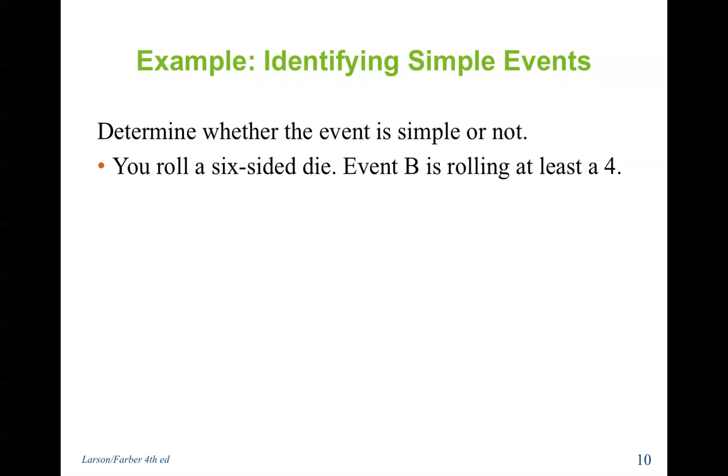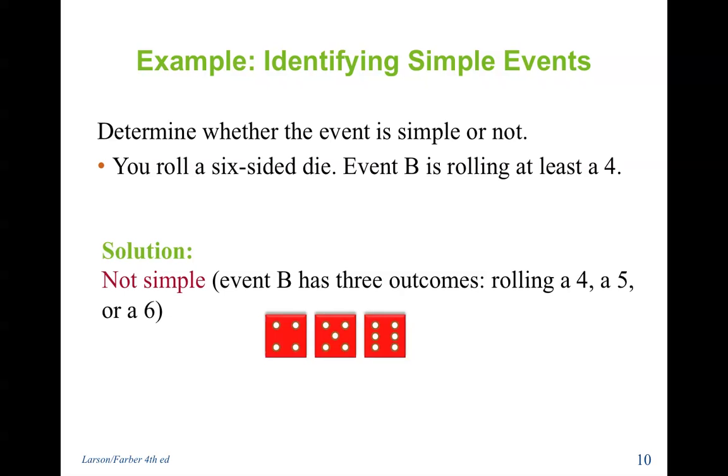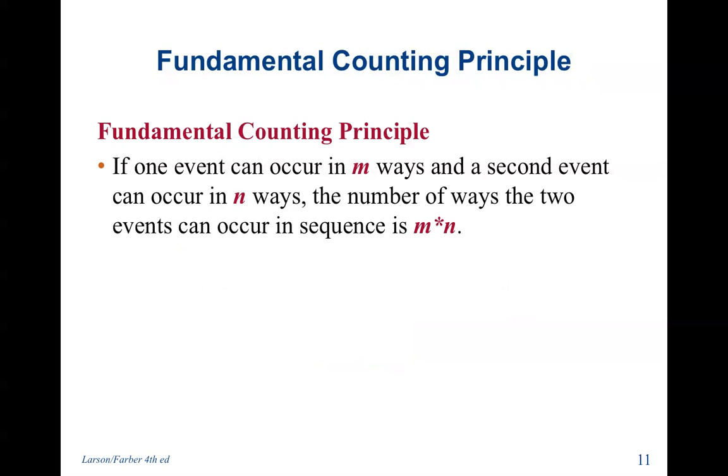Determine whether the event is simple or not. You roll a six-sided die, event B is rolling at least a four. Is there more than one possible choice with this? This one's not simple because there's three possible outcomes. We could roll a four, a five, or a six.